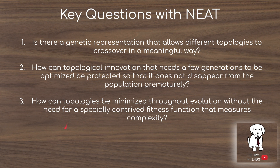The third question is: how can topologies be minimized throughout evolution without the need for a specially contrived fitness function that measures complexity? The idea is how can you reward networks for being as simple as possible without designing a function that restricts and limits the capacity of evolution too much.